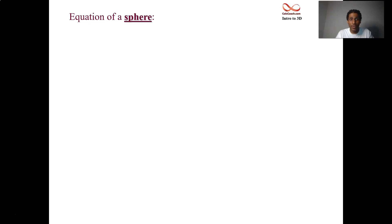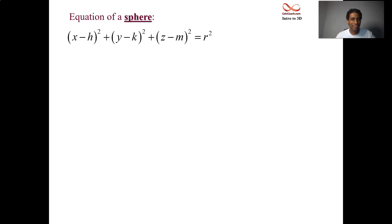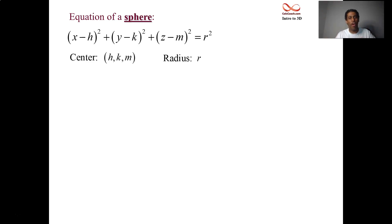So what are you going to do for a sphere — the three-dimensional analog of that? Well, h, k — you should use l next, but l looks too much like a 1, so I'm just going to use m. So the center of a sphere is (h, k, m), and the radius is still r — the square root of the right-hand side.